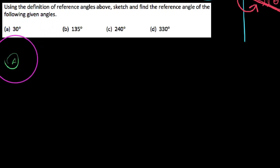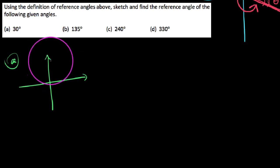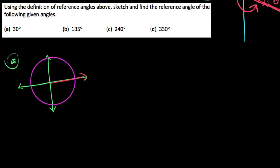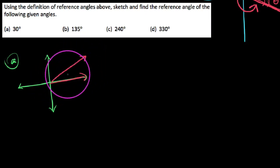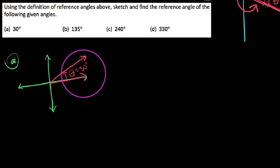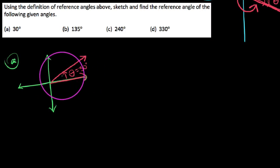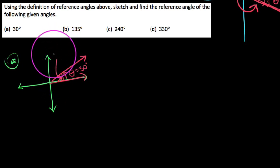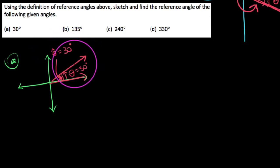Example A: we need to sketch a 30-degree angle. A 30-degree angle in standard position looks roughly like this. We say theta is 30 degrees, and we need to find the reference angle — the acute angle formed between this terminal side and the x-axis. You'll notice that when the angle terminates in the first quadrant, the reference angle and the actual angle are the same thing. So the reference angle is also 30 degrees.